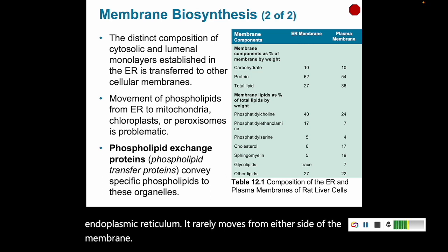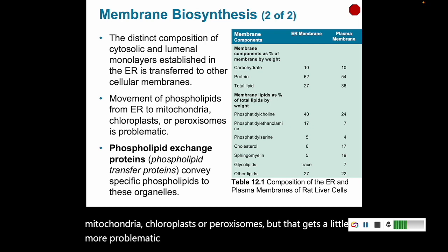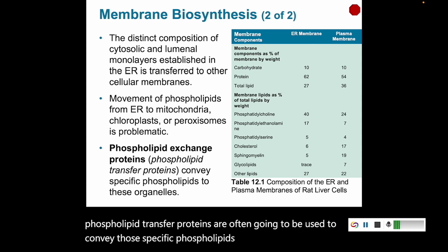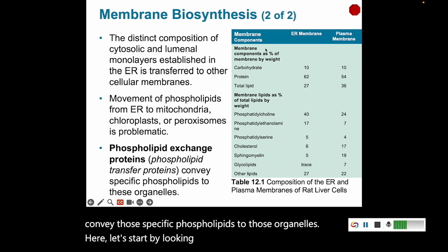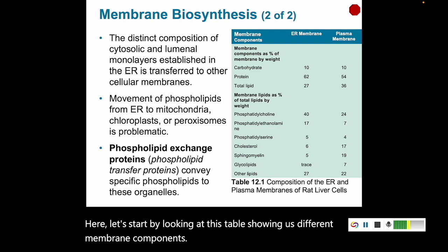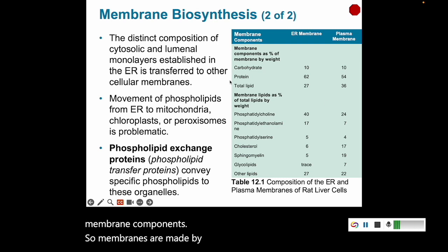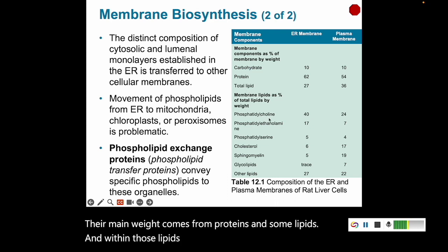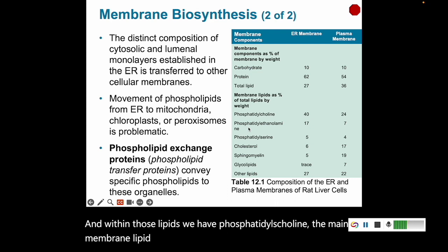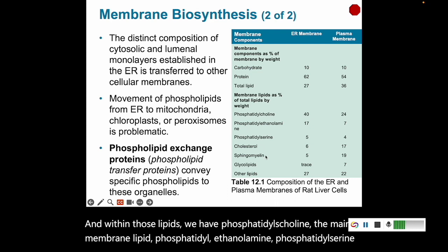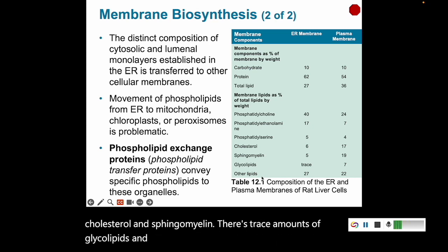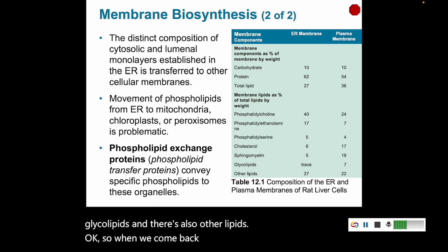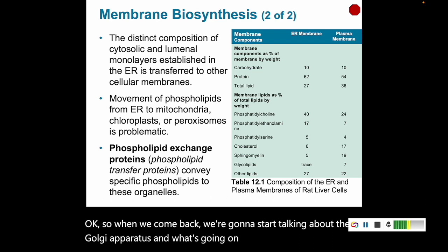Phospholipids can move from the endoplasmic reticulum to the mitochondria, chloroplasts, or peroxisomes, but that is more problematic, so phospholipid transfer proteins are often used to convey those specific phospholipids to those organelles. Looking at a table of membrane components: membranes contain small amounts of carbohydrates, but their main weight comes from proteins and lipids. Within those lipids we have phosphatidylcholine as the main membrane lipid, phosphatidylethanolamine, phosphatidylserine, cholesterol, and sphingomyelin, as well as trace amounts of glycolipids. When we come back, we'll start talking about the Golgi apparatus and protein synthesis there.